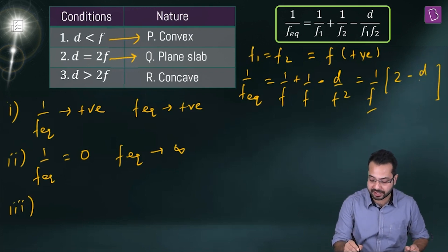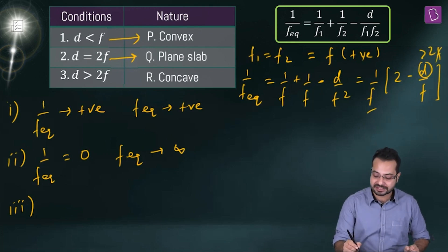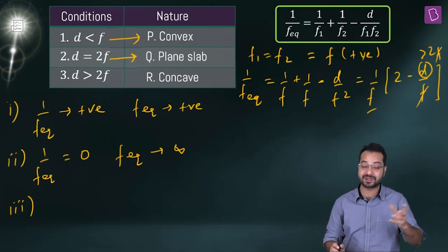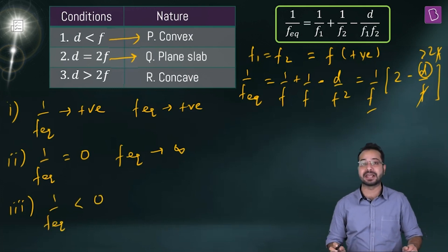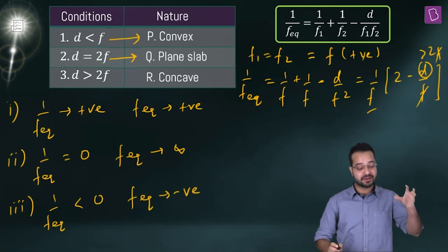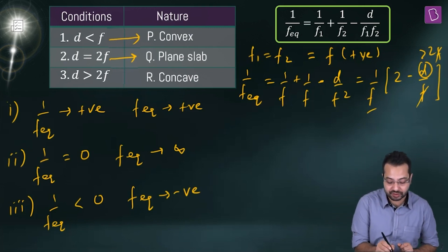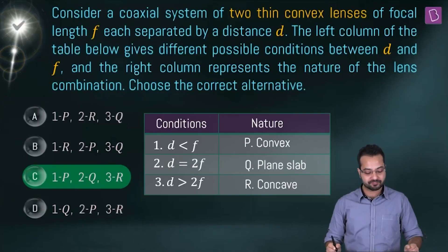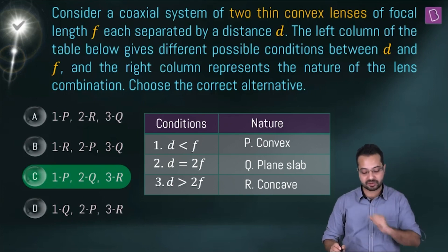Third situation: d is greater than 2f. Then d/f > 2, so 2 - (d/f) is negative. This means 1/f_eq is negative, f_eq is negative, and the combination acts as a concave lens. So the correct option is C: 1 matches with p, 2 matches with q, and 3 matches with r.